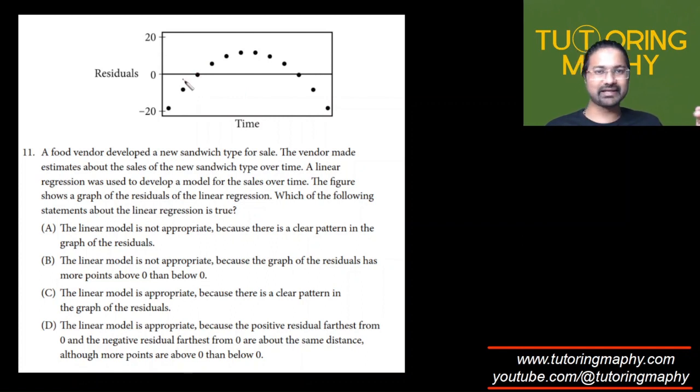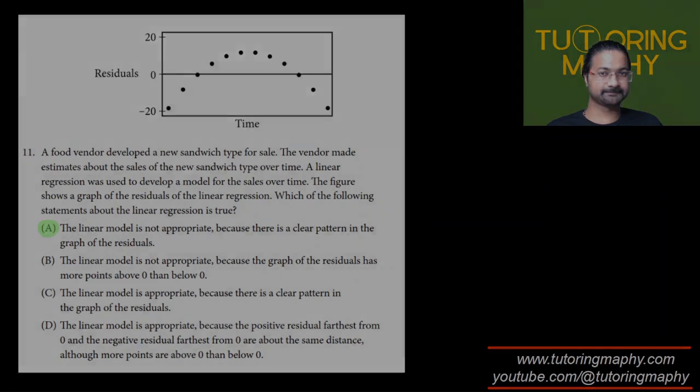Well, residuals are sort of like the error, right? And don't you think the errors are actually forming a quadratic pattern? It's a parabola. So it means that the linear model is actually not appropriate because the residuals are clearly showing us a particular pattern. Option A is the most relevant option because of the pattern shown by the residuals.